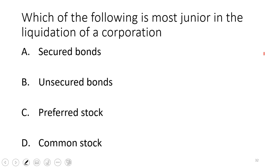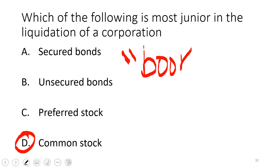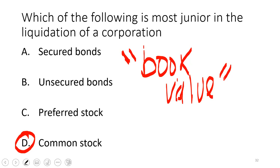In a corporate liquidation, the most junior position belongs to common stockholders — last in line with only a residual claim. If there's anything left after all other claims are satisfied, common stockholders get it. The theoretical liquidation value of a corporation is its book value. In bankruptcy (Chapter 7 or 11), common stock is last. Dean's way to think about it: common stockholders have the first claim on assets as an ongoing concern but the last claim in liquidation.